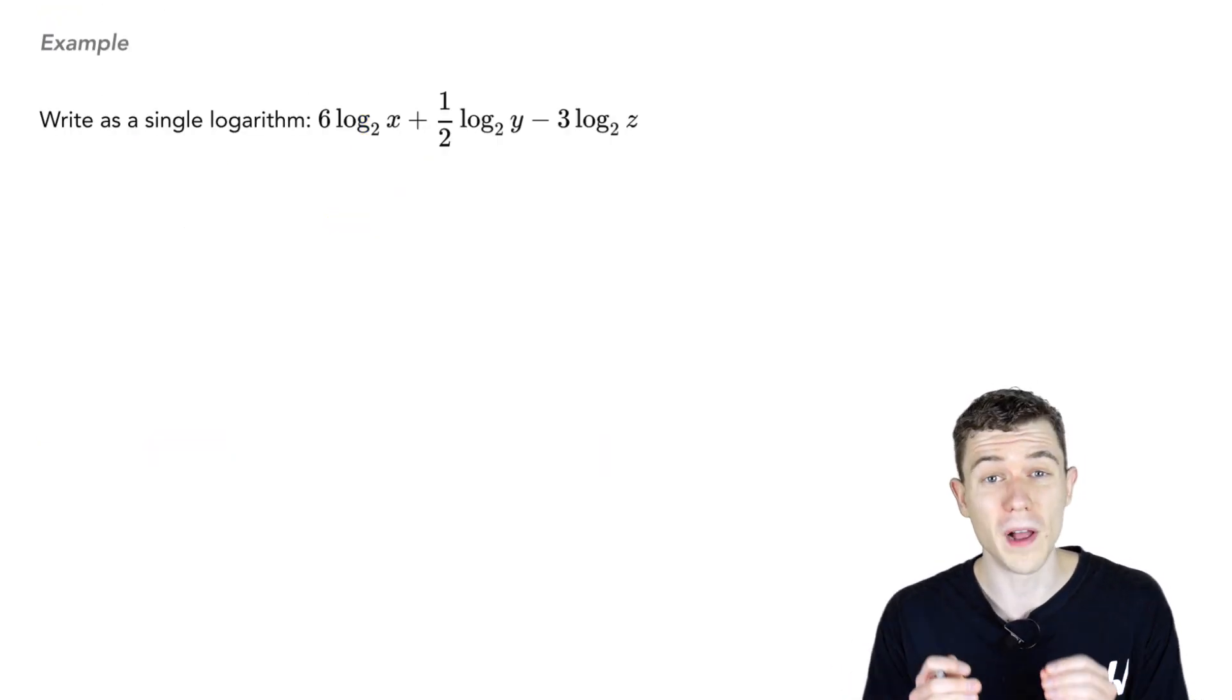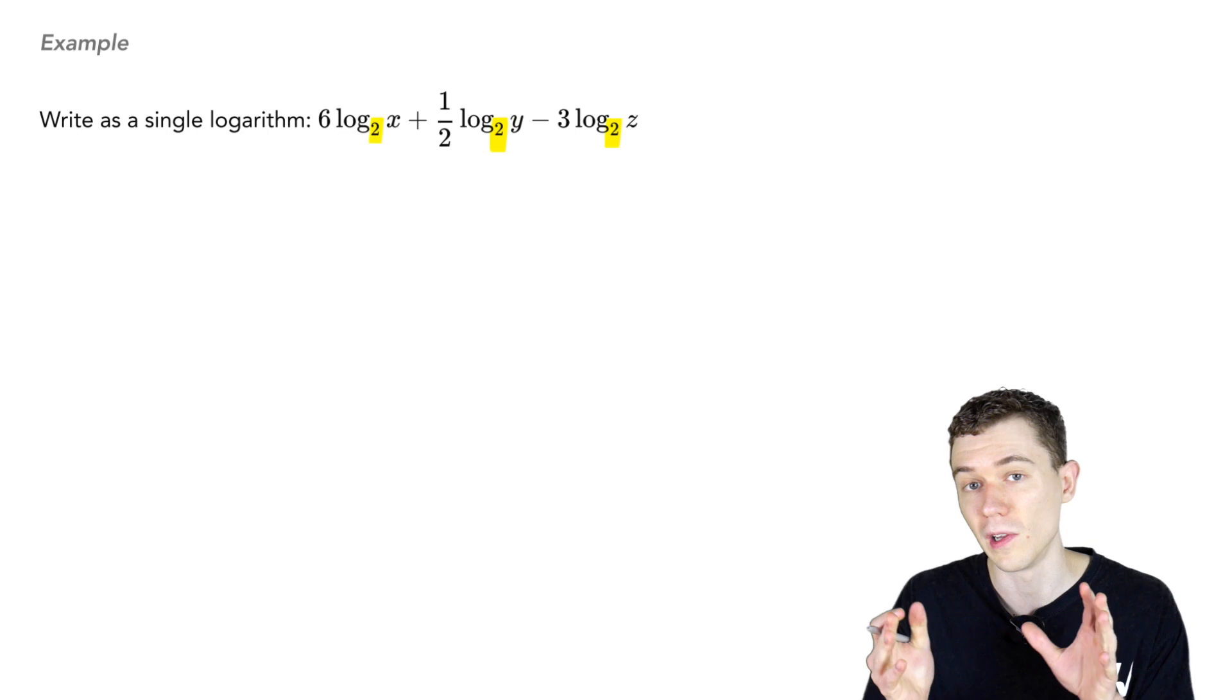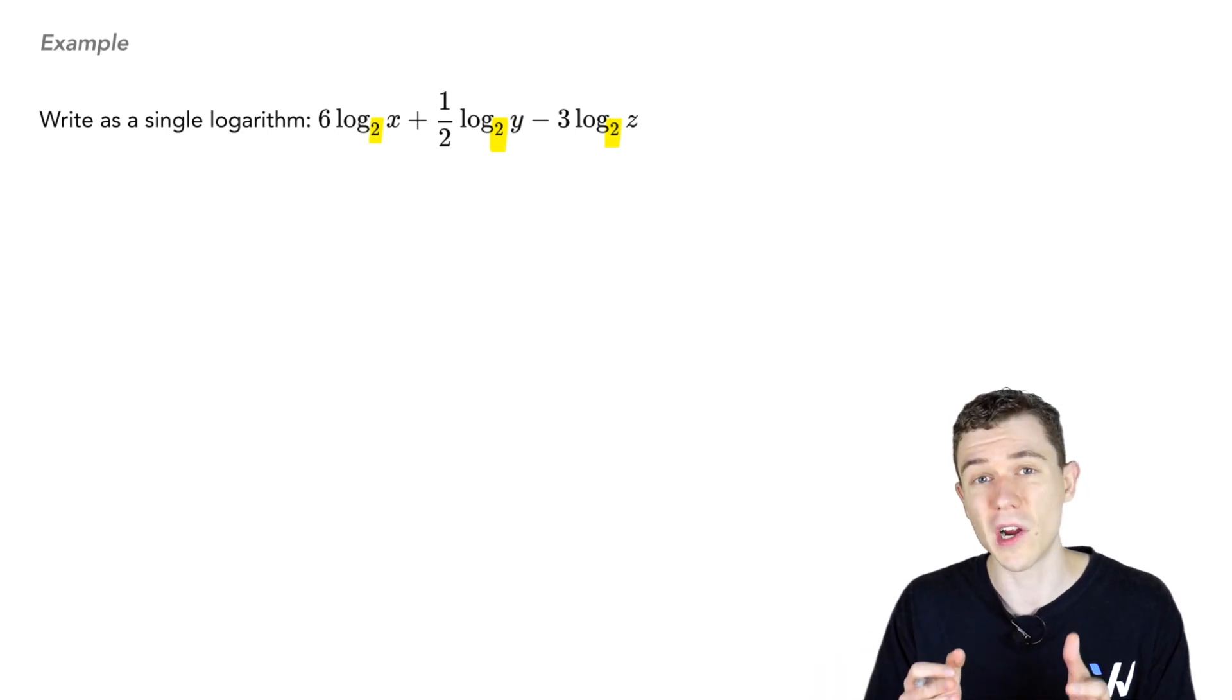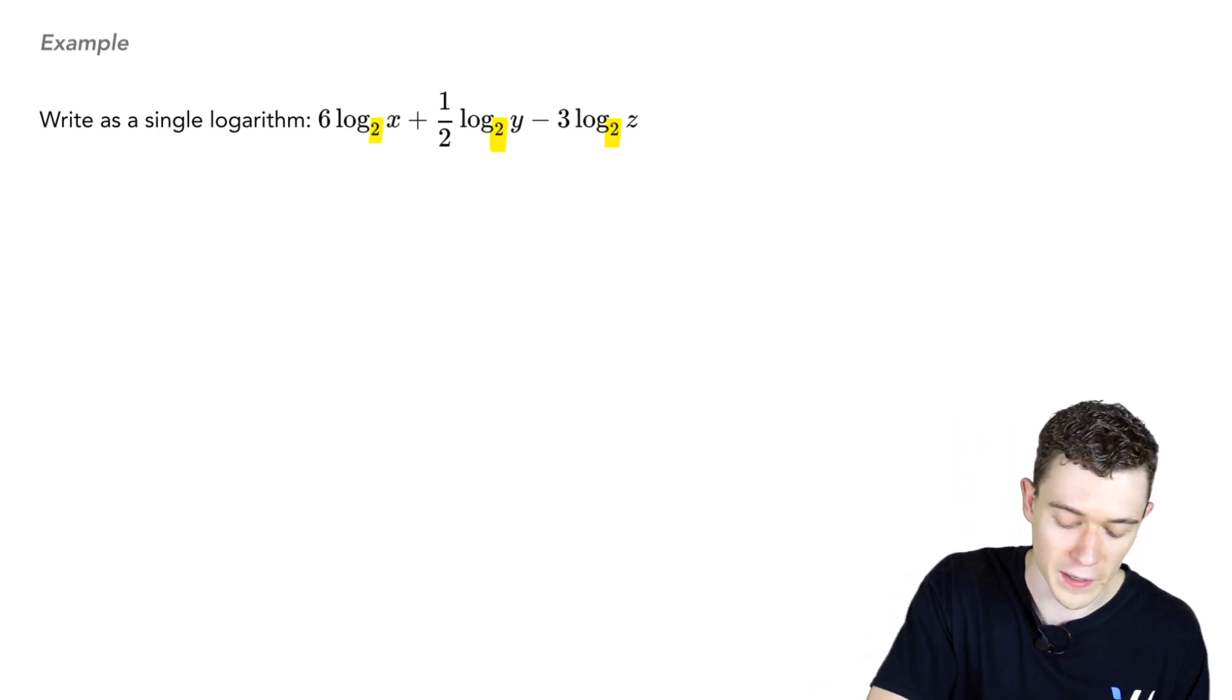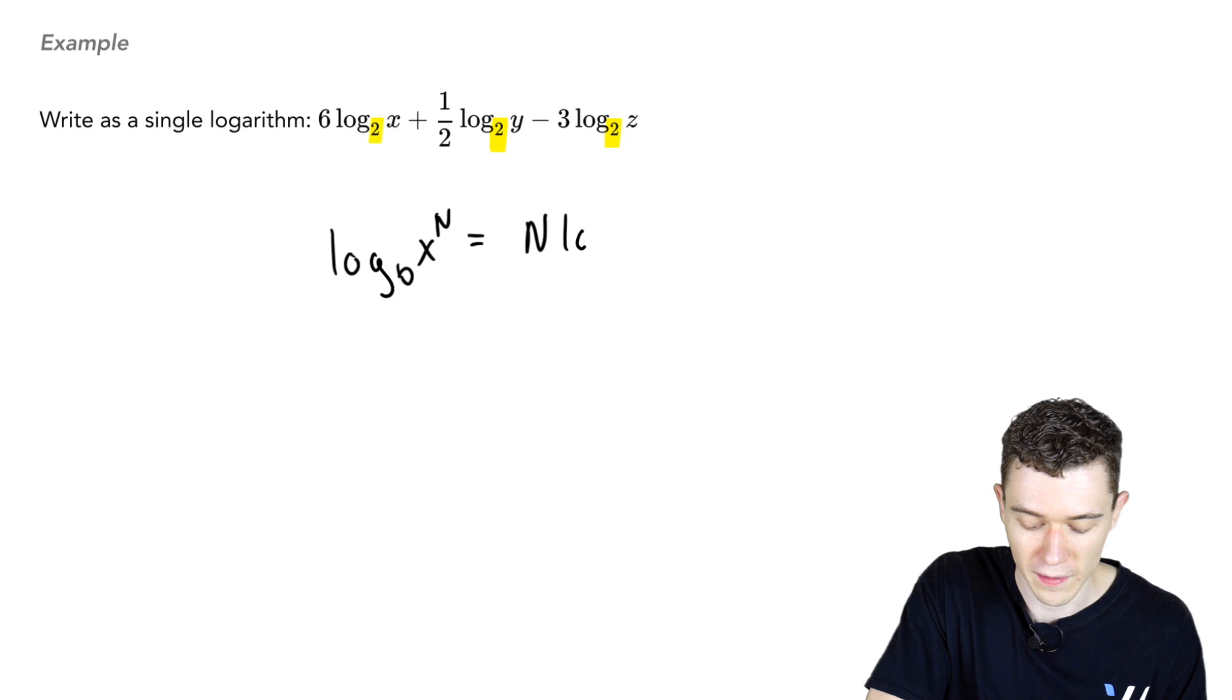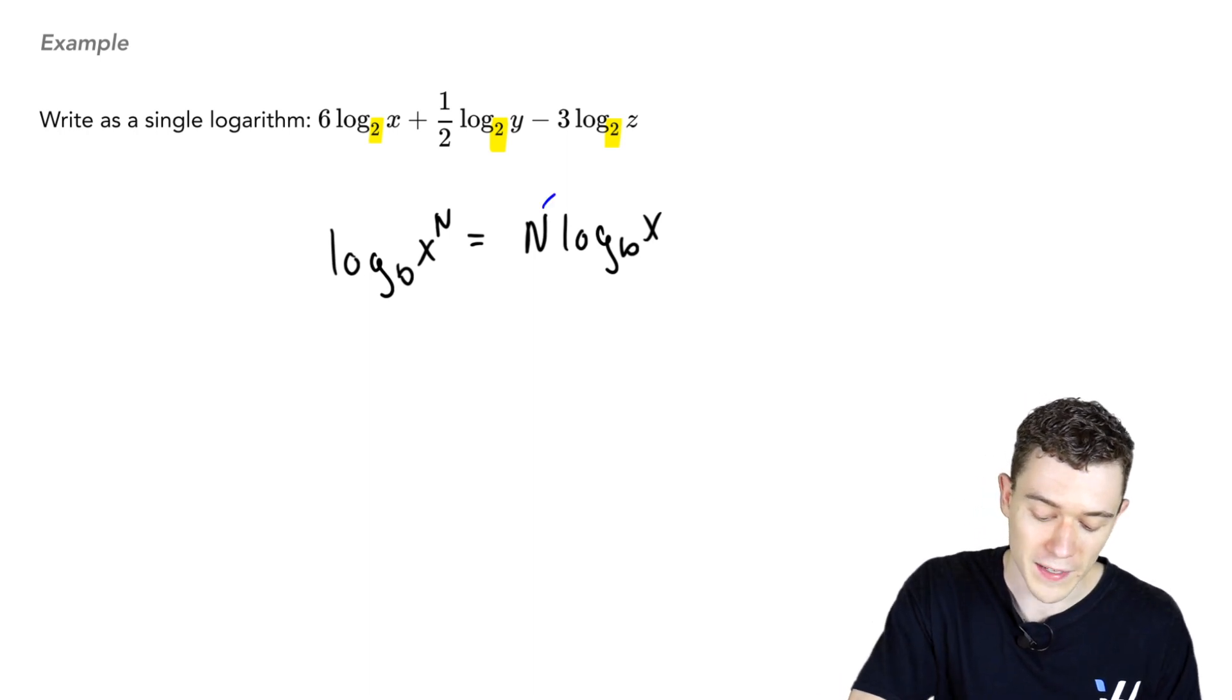Here's a quick example applying these properties. We have a bunch of logarithms. We'd like to write it as a single logarithm. Notice they're all base 2. The fact that they're all logarithms base 2 lets us apply these properties. Now, before we can smash these together, we need to take care of these coefficients. Remember one of those properties that log base b of x to the n, this is the same thing as n log base b of x. So, this is an equality. We can go back and forth. Often we think of bringing the power down.